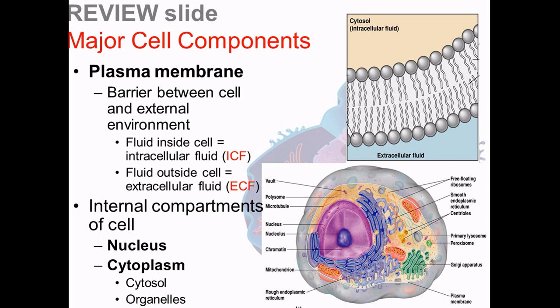When we look at the cell components, we have the plasma membrane, which is the outer membrane that holds the intracellular fluid — the stuff inside the cell — and separates it from the extracellular fluid. All this stuff inside the cell is referred to as the cytoplasm. The cytoplasm is basically a liquidy substance that has a lot of particles and organelles inside of it.